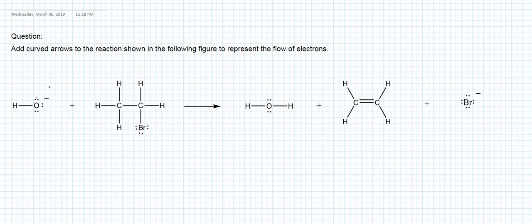We start from the lone pair on oxygen and end at hydrogen, using full-headed arrows. Then we have to form a double bond between carbon and carbon, so we use the electrons in the C–H bond that is breaking to form the double bond here.